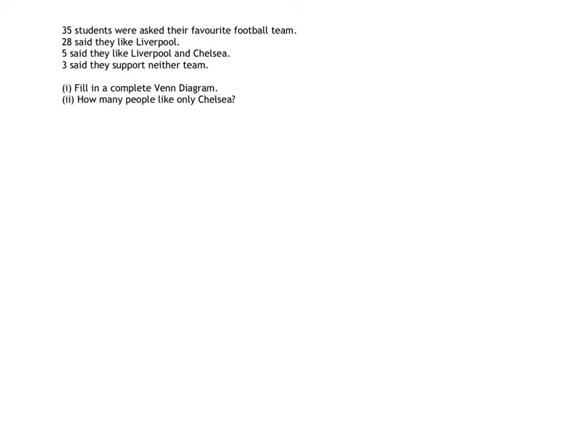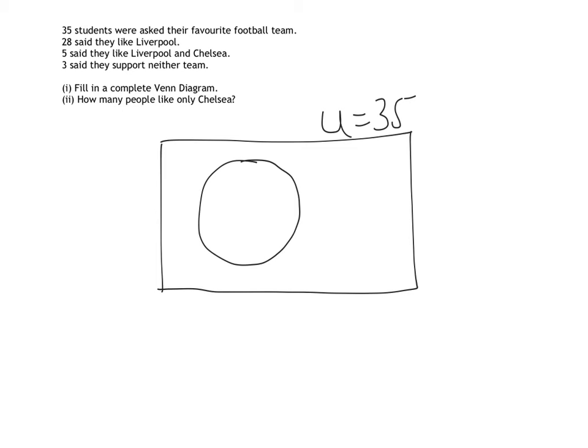Let's see how we got on. The first thing I want to do is to draw my universal set. I'm going to write down 35 people took part. I need a Liverpool circle. I need a Chelsea circle. So I know that 28 people said they liked Liverpool. And at this point, I actually don't know how many people liked Chelsea in total, so I'm just going to leave that as C.